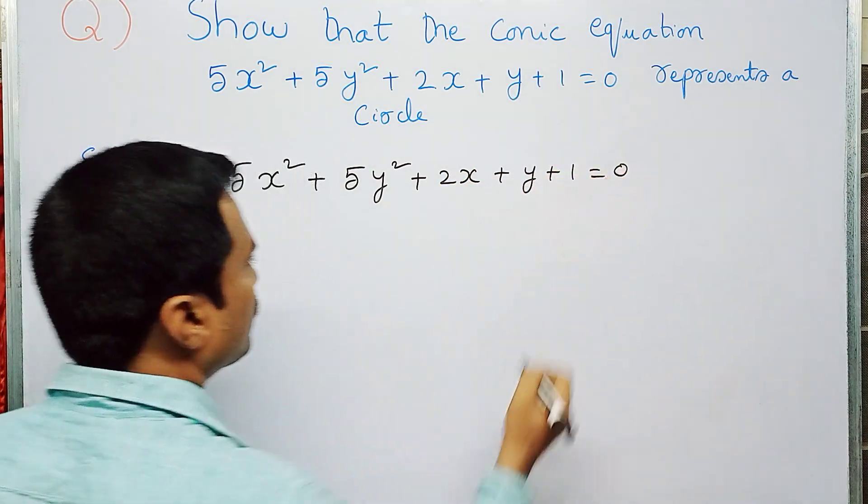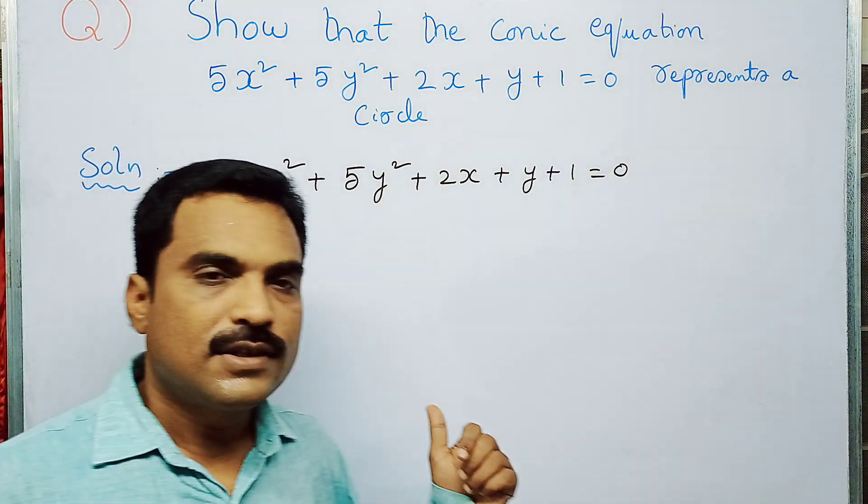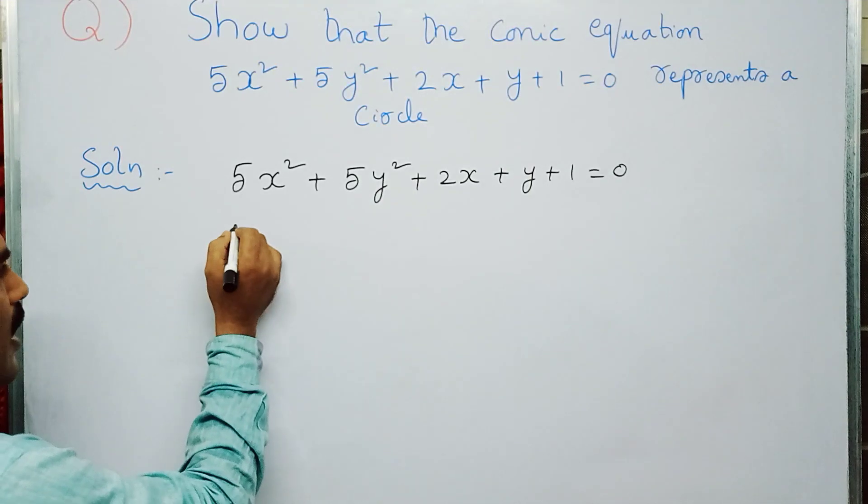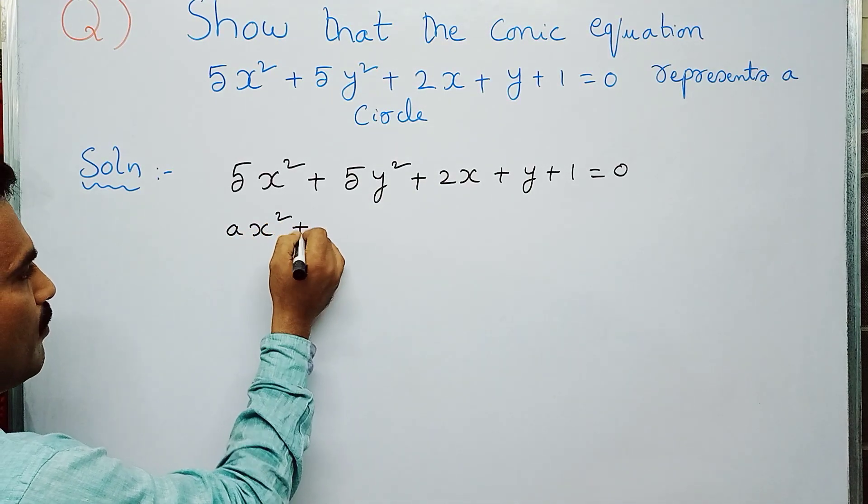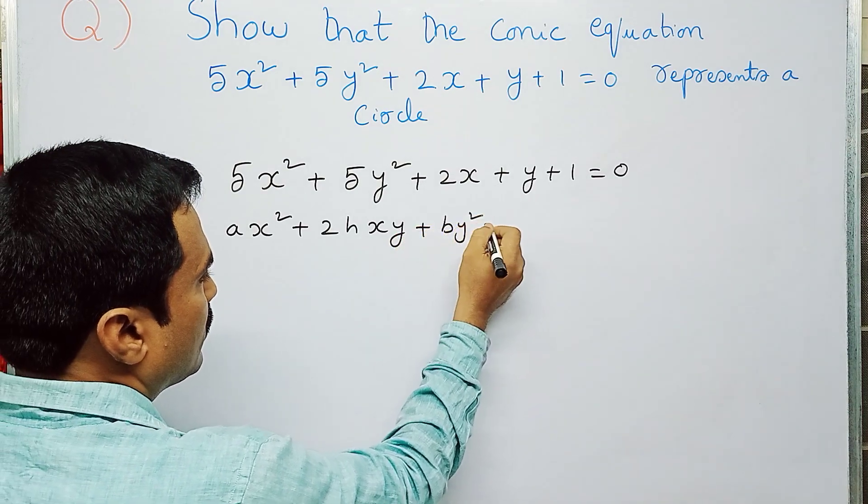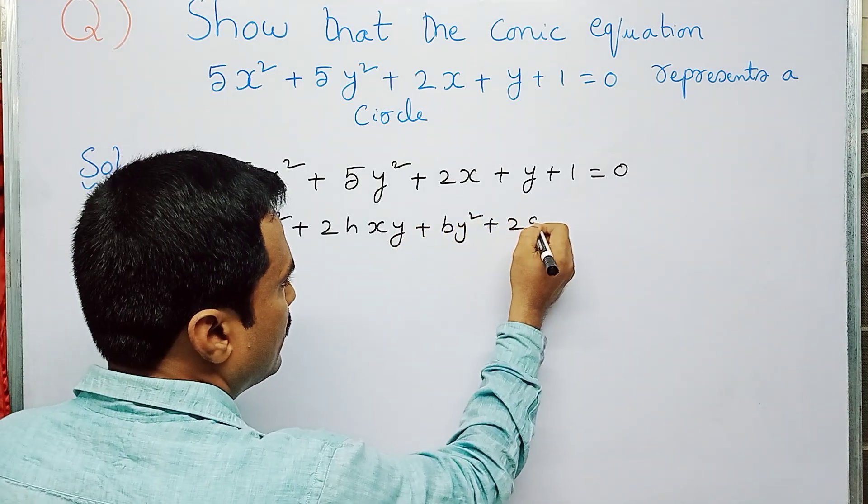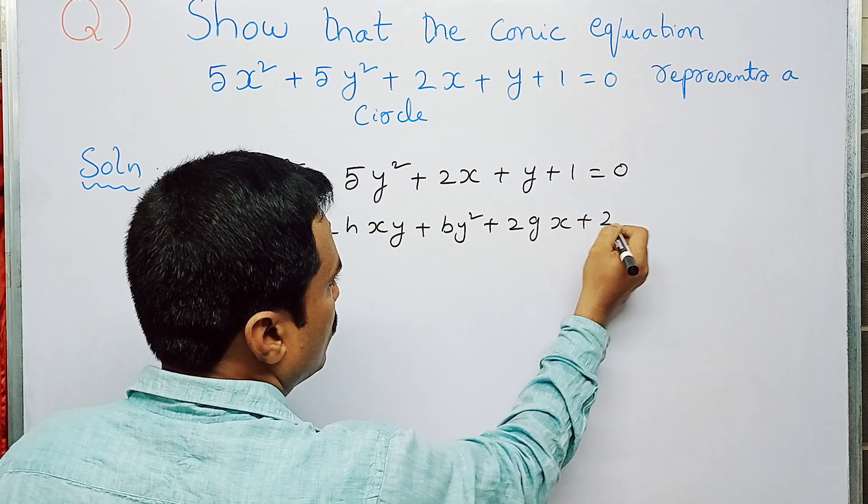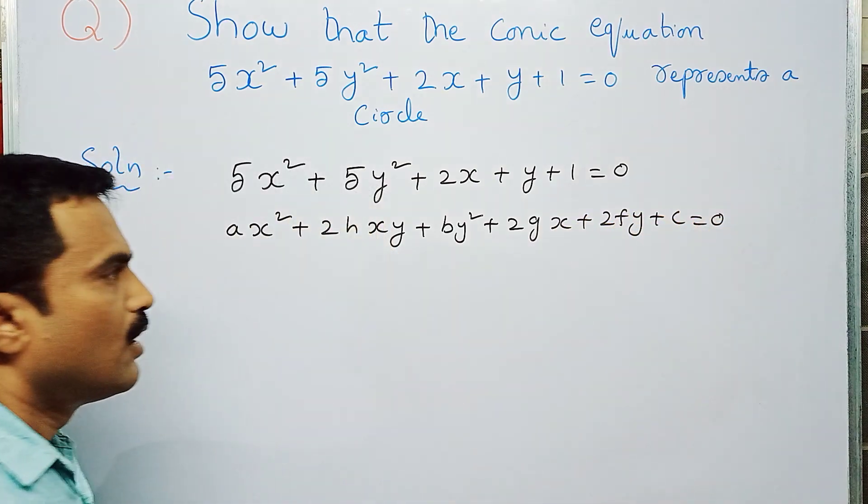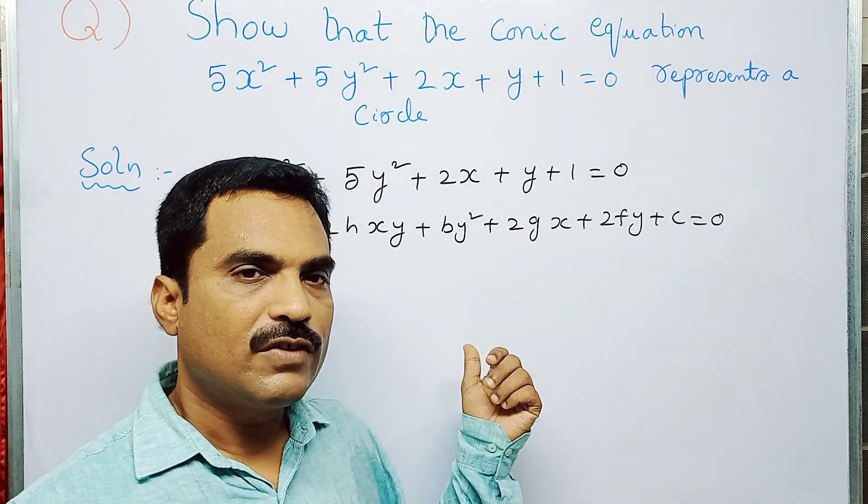The next step: write the general equation of a conic. That is ax² + 2hxy + by² + 2gx + 2fy + c = 0. Now, by comparing this general equation of conic with the given equation of conic, find the values of h.